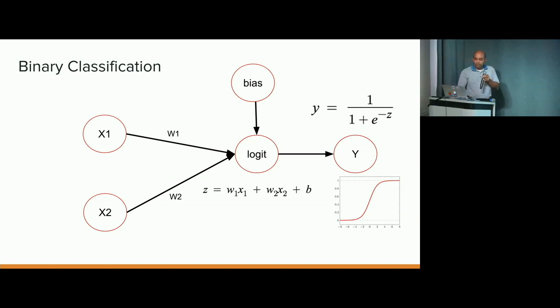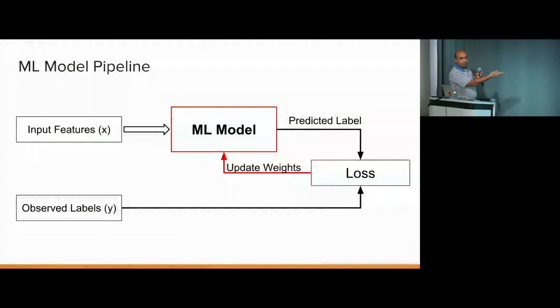And in machine learning terms, so you have input features, observed labels. And then you're going to build this machine learning model. We're going to get predictions from the machine learning model. And then we're going to compare with the observed labels over there, compare these two, and then update our weights of the ML model.